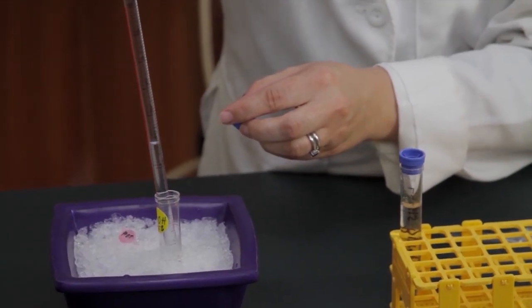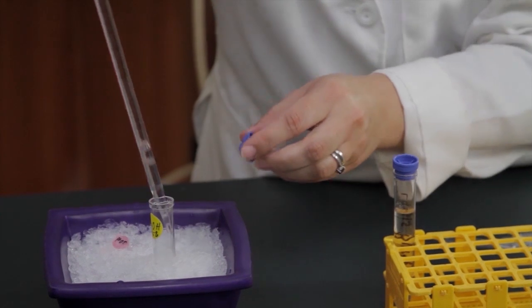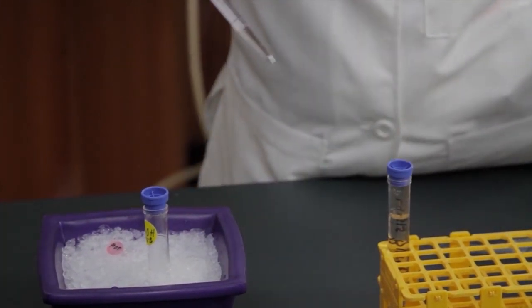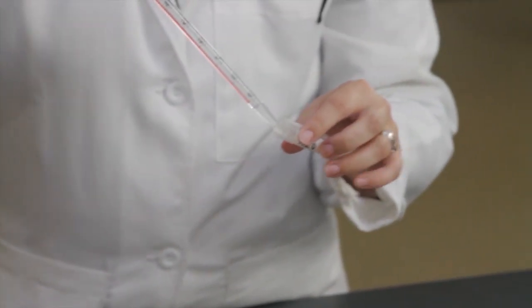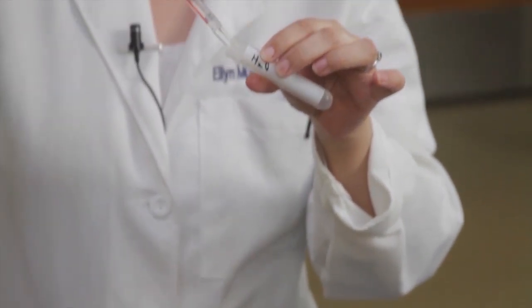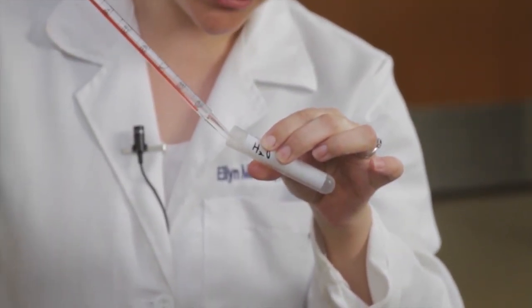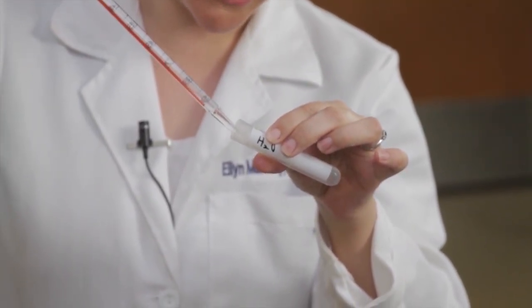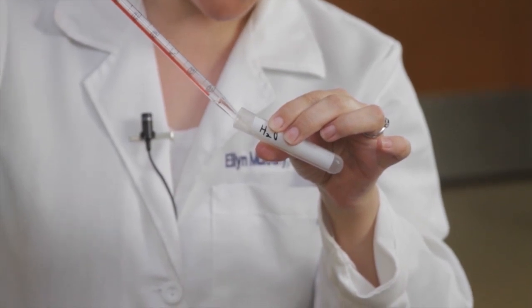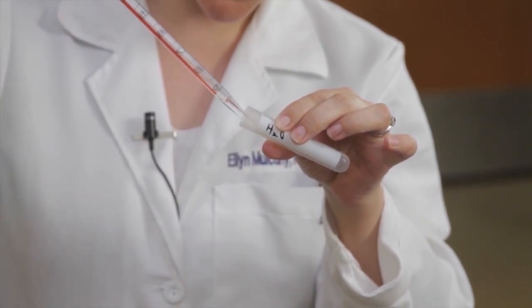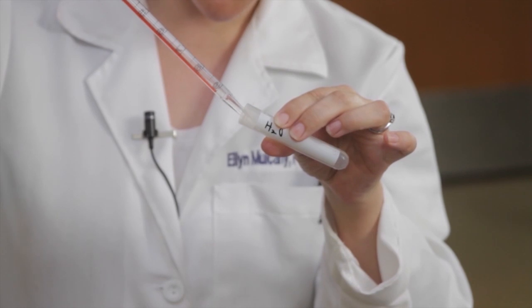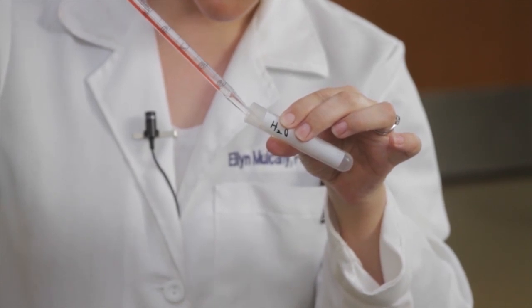The alcohol is on ice. I'm going to add the alcohol at an angle and slowly add it in to our extraction, so that the alcohol runs down the side of the tube. And I'm doing this slowly to create two layers, the aqueous layer and the nonaqueous layer.